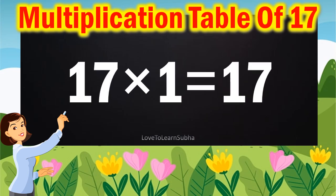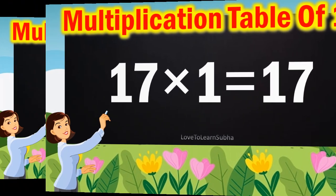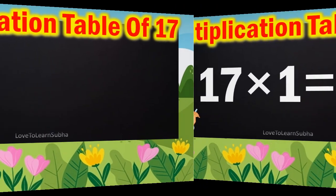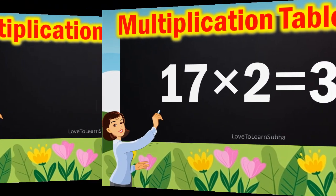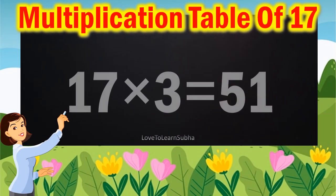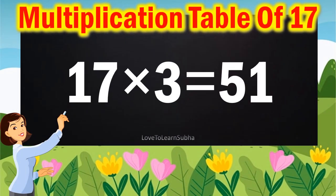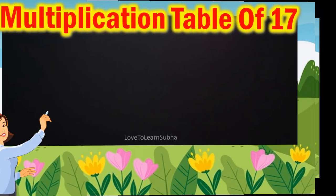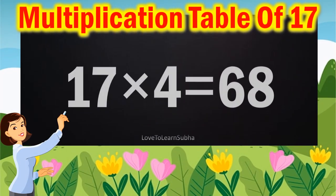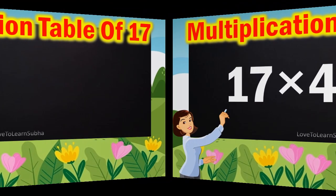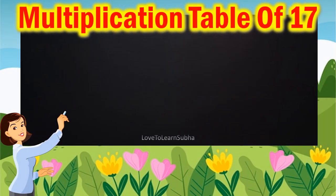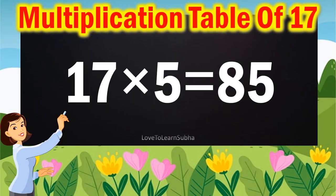17 ones are 17, 17 twos are 34, 17 threes are 51, 17 fours are 68, 17 fives are 85,